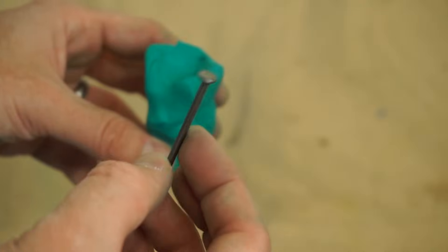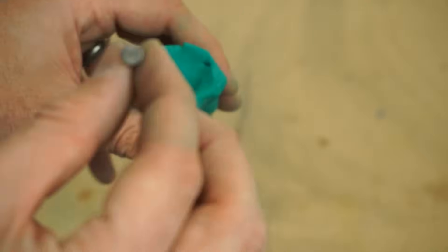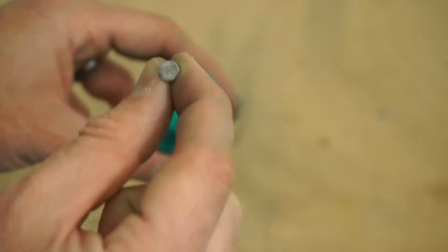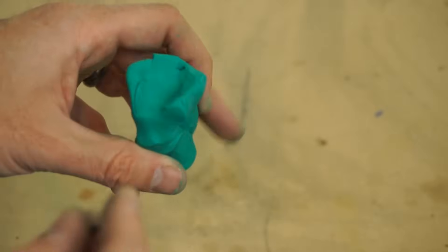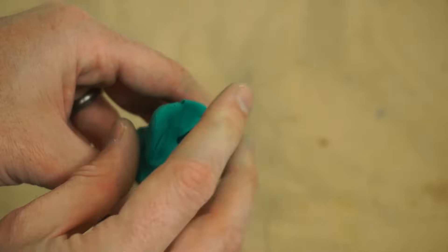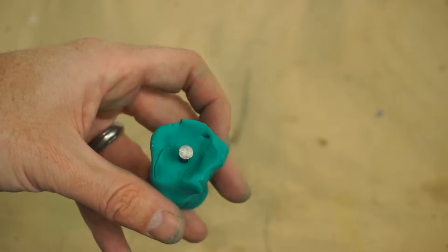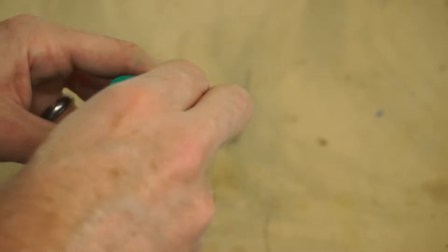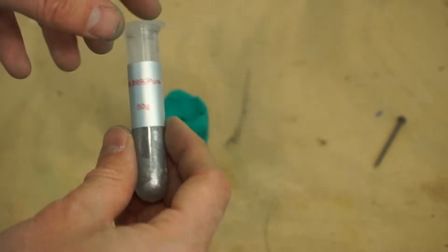So I'm going to make a mold for it just using some modeling clay. I'm going to press this steel nail into here and see if I can make a little mold for the gallium. Press it in. We'll only do it about that long. Pour a liquid gallium in there.